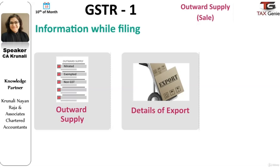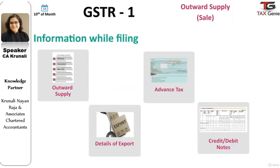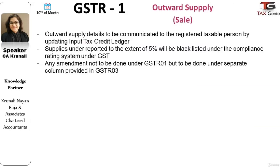Outward supplies can be categorized into nil-rated, exempted, and non-GST outward supplies. Supplies exported, including deemed exports, also need to be declared in this return. Tax liability of the amount received in advance against a supply to be made in future also needs to be declared. Details of taxes already paid on invoices issued in the current period need to be keyed in, and outward supply details need to be communicated to the registered taxable person by updating the input tax credit ledger.